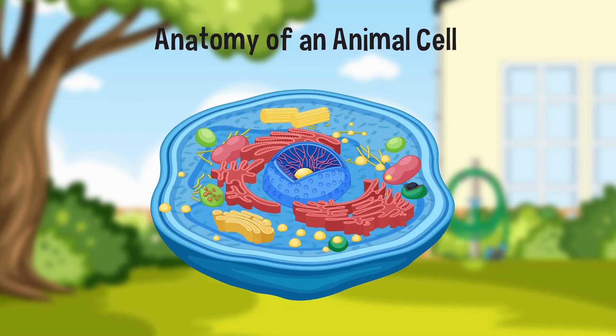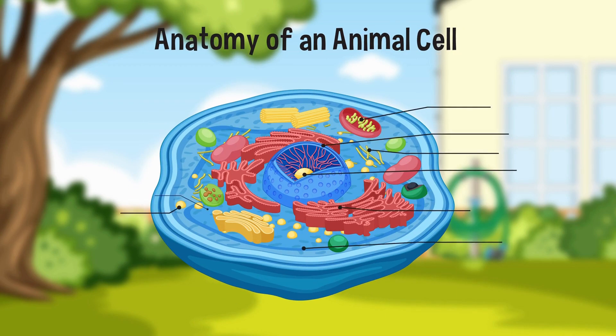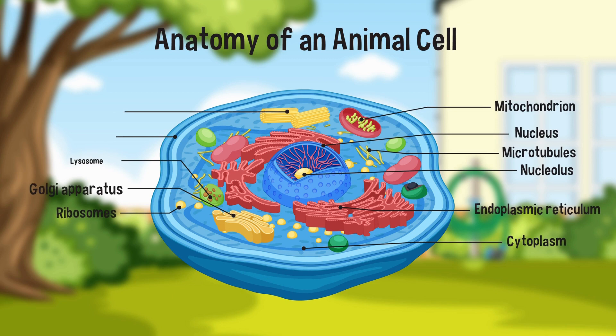Animal cells have irregular shapes. They contain a nucleus, cell membrane, cytoplasm, mitochondria, endoplasmic reticulum, Golgi bodies, centrosomes, and ribosomes.